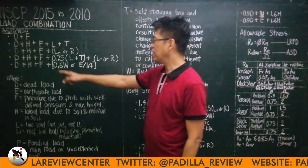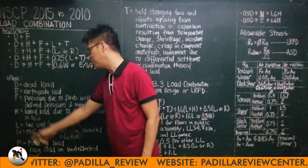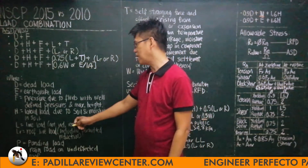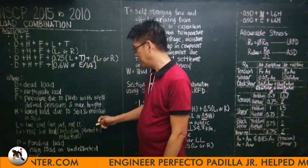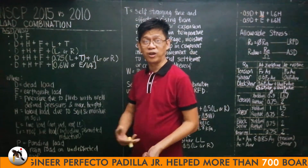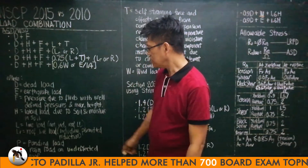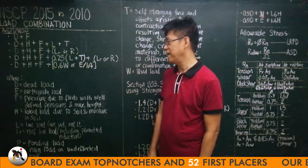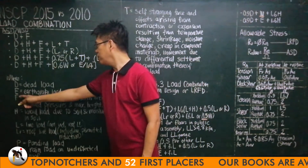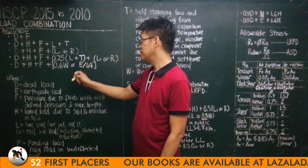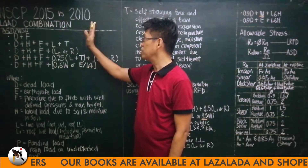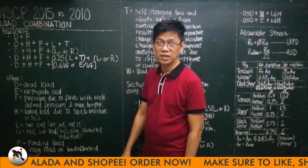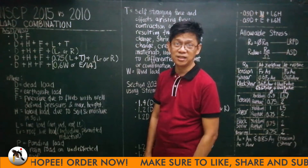H is the lateral or horizontal load — the symbol H comes from the word 'horizontal.' It is the horizontal load brought about by soil pressure and the moisture or water that the soil contains. This is normally dominant in the design of retaining walls. E is the earthquake load. There is no change or difference between 2010 and 2015 as far as WSD or ASD is concerned.